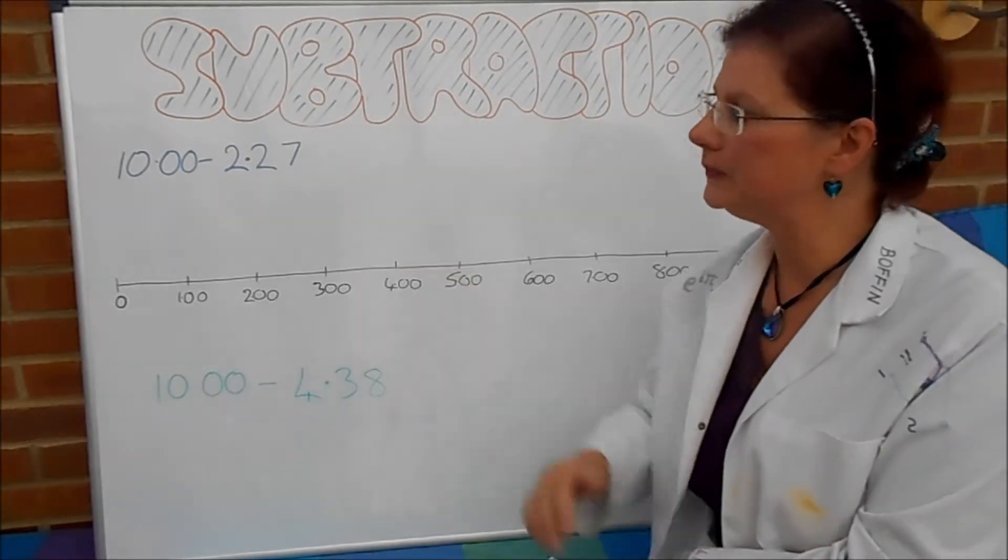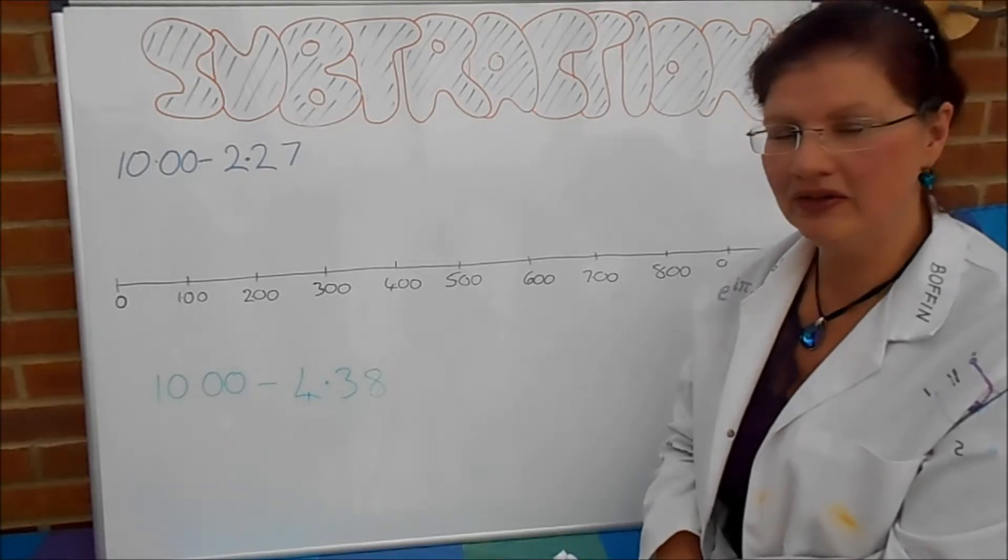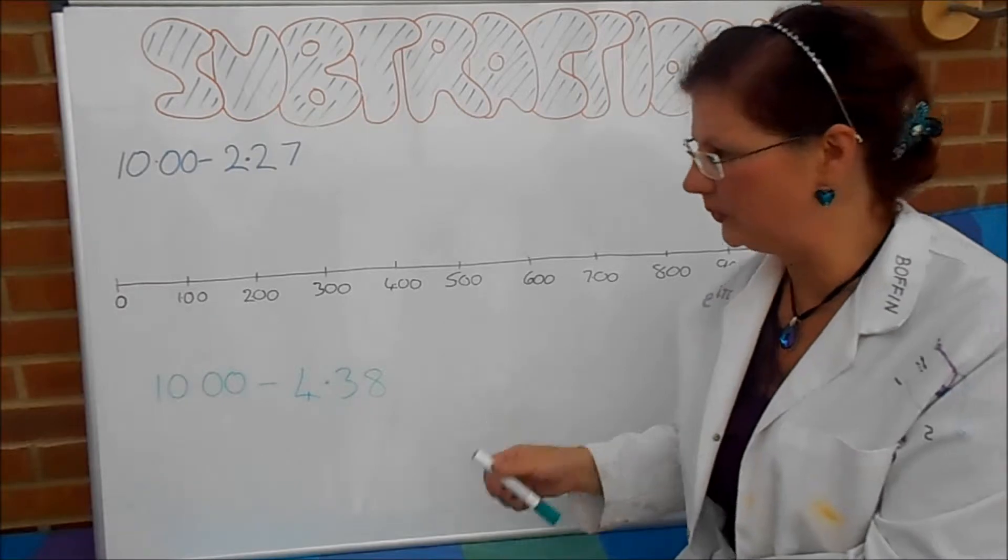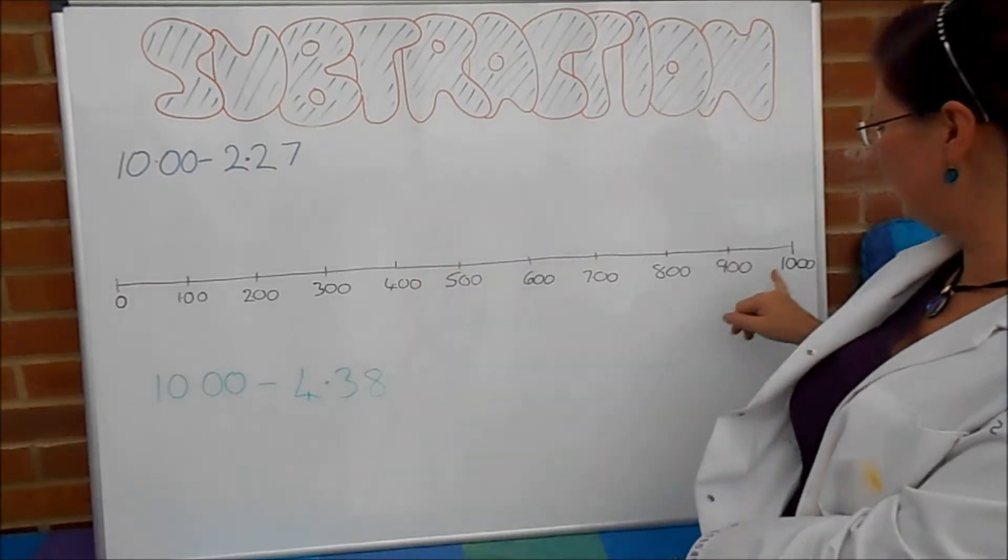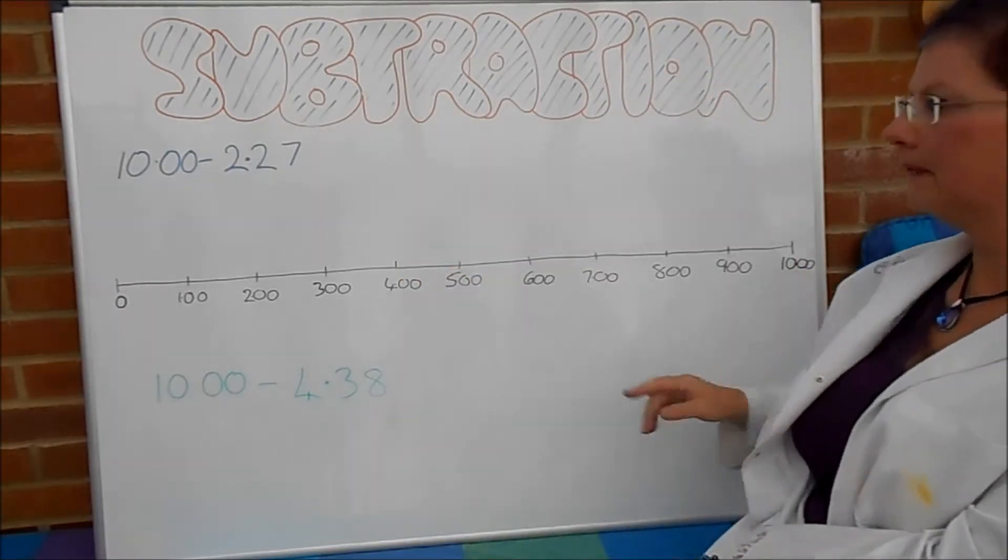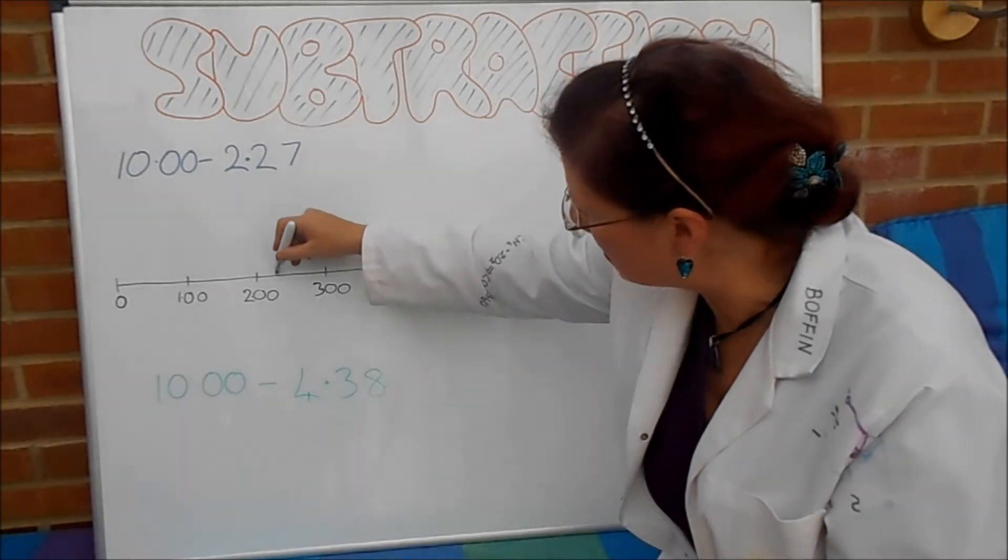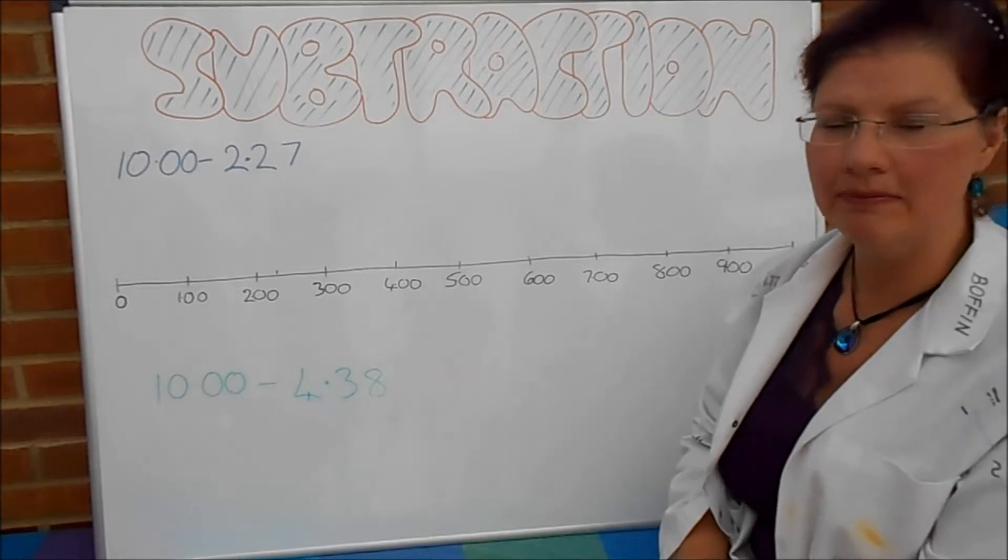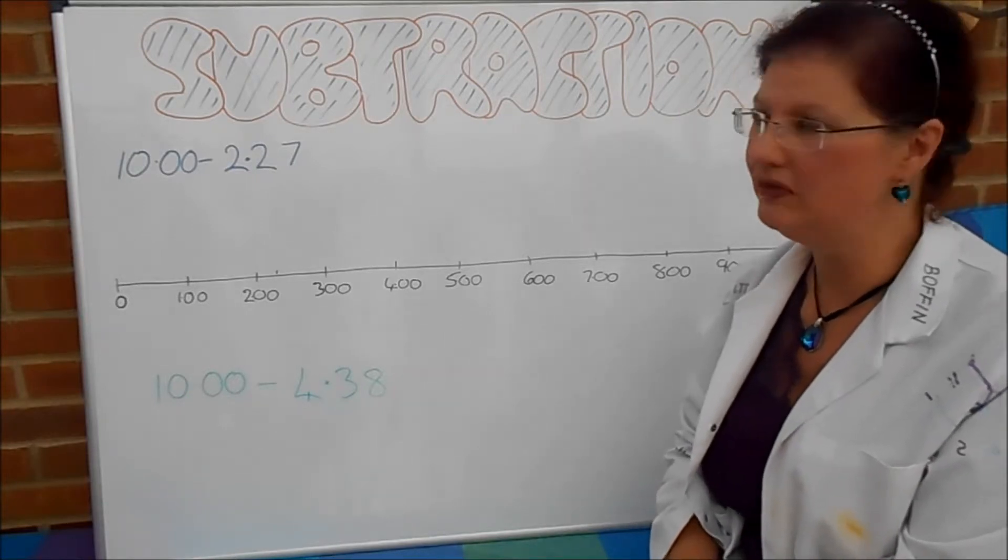So, here we've got £10 take away £2.27. So, I'm just going to show you how we do it with the number line, and then you're going to do the bottom one. So, £10, that's over here. £2.27, that's about there. And you've got to hop all the way up to £10. And we're going to do it in convenient chunks.